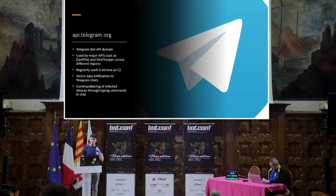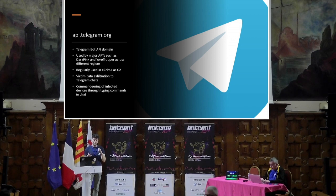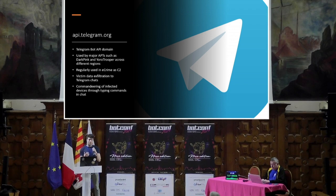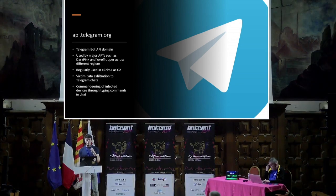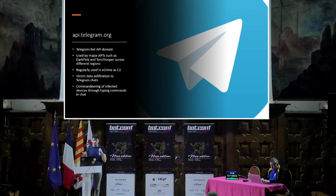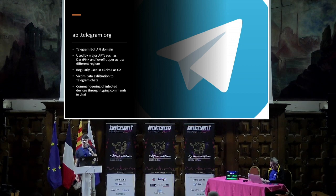So why is this domain so dangerous? This domain is related to the Telegram bot API, which you can use to create your own bots in Telegram to enhance the functionality of a normal Telegram chat. You can converse with these bots like a normal person, but they're automated — they can send you images and different information. They've been used by major APTs such as DarkPink and EuroTrooper, and they're also regularly used in eCrime. For example, Agent Tesla uses it to exfiltrate victim data, and it's also used by the MatriX keylogger.